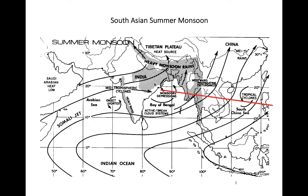We can only assert geostrophic balance on the largest scales in the tropics, but this is approximately applicable at these scales. In the absence of rotation, such as at the equator, the PGF is balanced by friction. Vortices are also found upstream of terrain features, such as to the west of the Western Ghats in the Arabian Sea, in the Bay of Bengal, or the South China Sea.